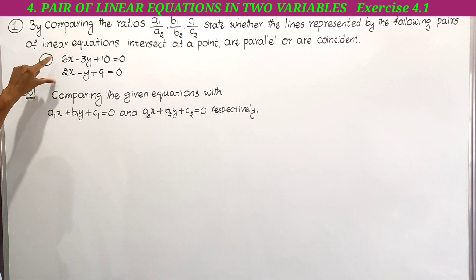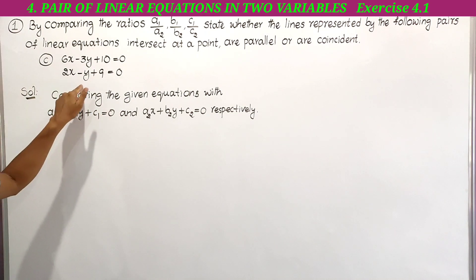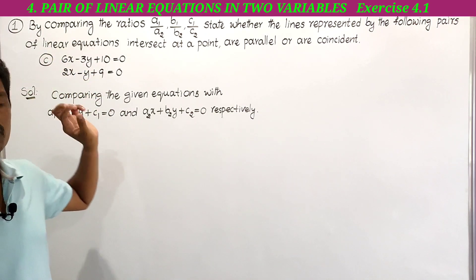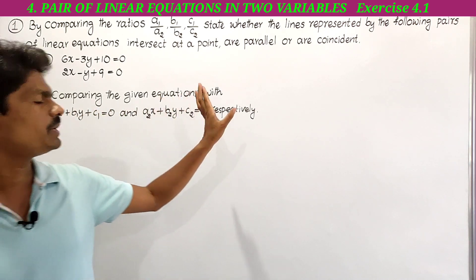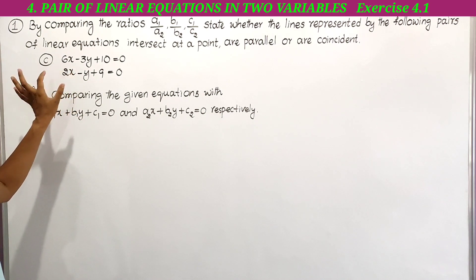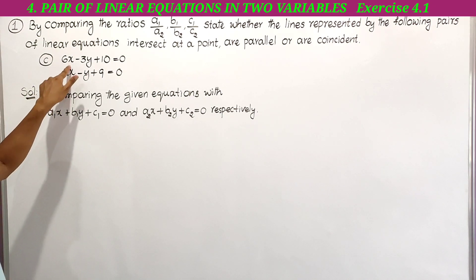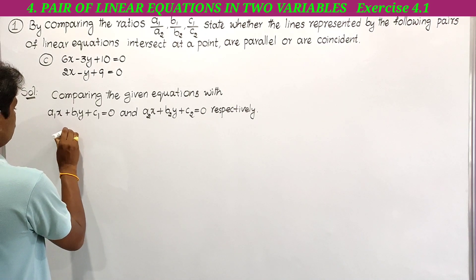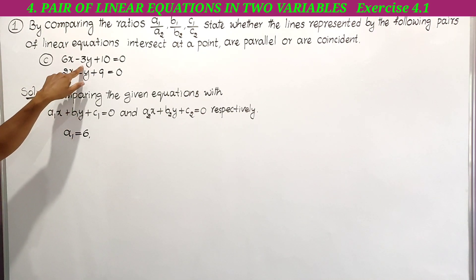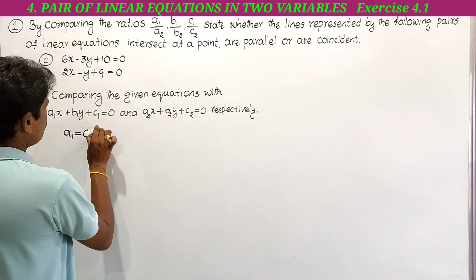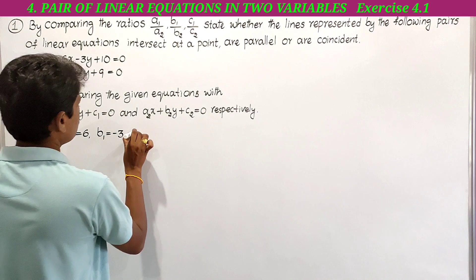This is part (c) in the first problem. The given pair of equations are 6x minus 3y plus 10 equal to 0, and 2x minus y plus 9 equal to 0. Now we compare the given equations with a1x plus b1y plus c1 equal to 0 and a2x plus b2y plus c2 equal to 0 respectively. Comparing the first equation: a1 is the x coefficient, which is 6, so a1 equals 6. b1 is the y coefficient, which is minus 3, so b1 equals minus 3. The constant is 10, so c1 equals 10.